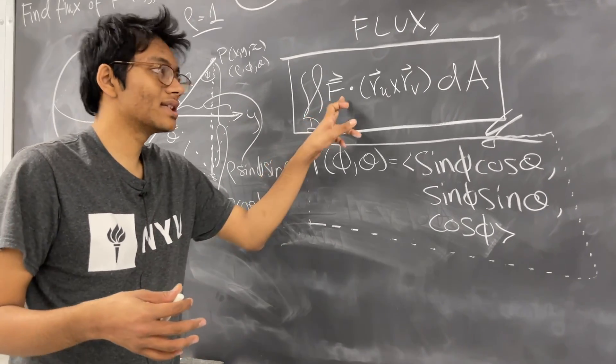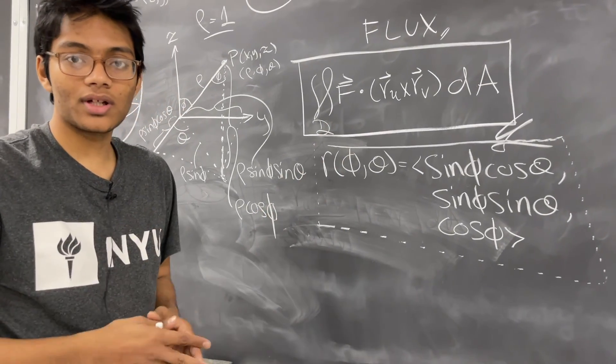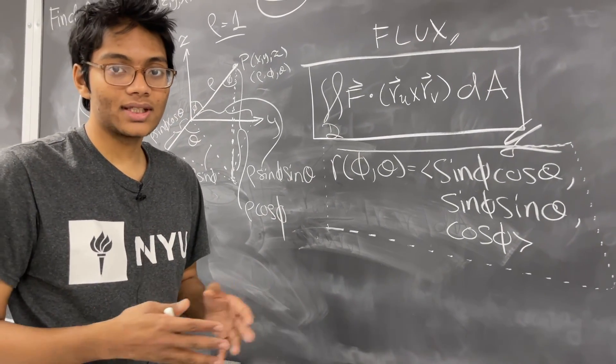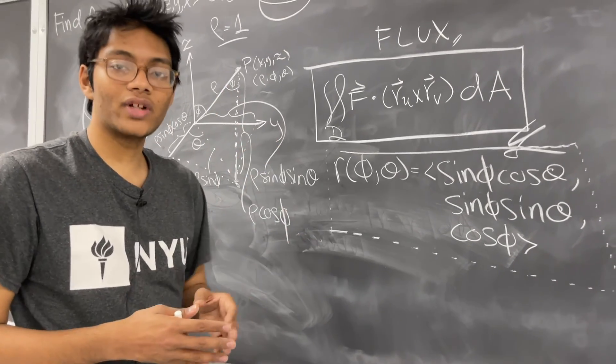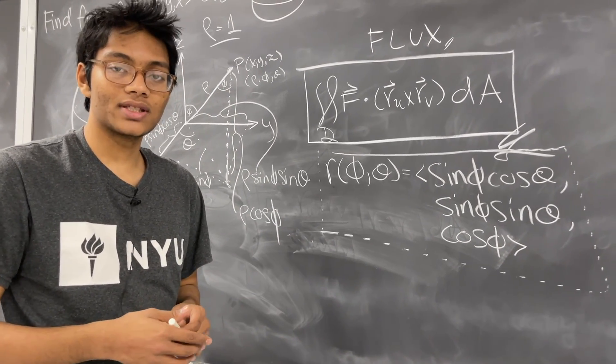After we take the cross product, we're going to take the dot product. After we take the dot product, we're going to take the double integral. After we take the double integral, we're going to find the total flux over the surface F.